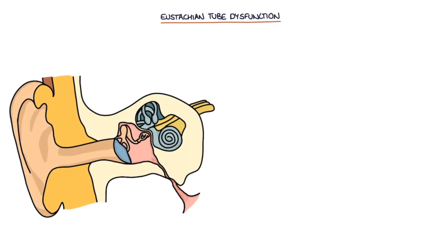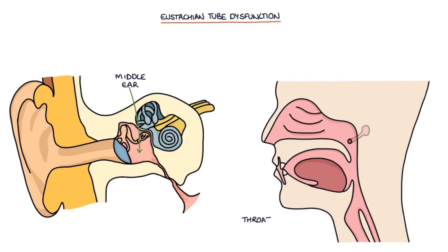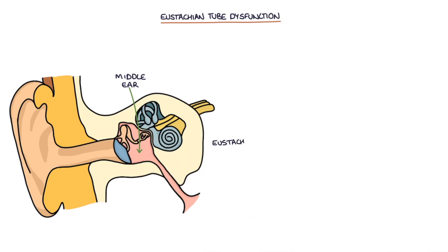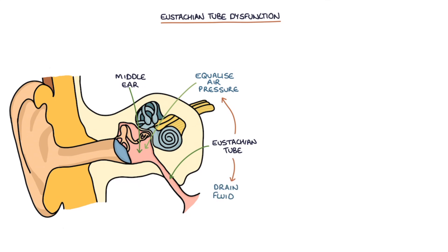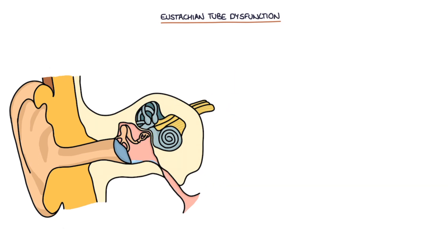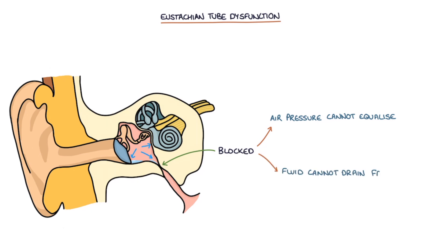Eustachian tube dysfunction is when the tube between the middle ear and the throat is not functioning properly. The eustachian tube is mainly present to equalize the air in the middle ear and to drain fluid from the middle ear. When the eustachian tube is not functioning correctly or becomes blocked, the air pressure in the middle ear cannot equalize properly, and fluid cannot drain freely. The air pressure between the middle ear and the environment can become unequal, and the middle ear can fill with fluid.